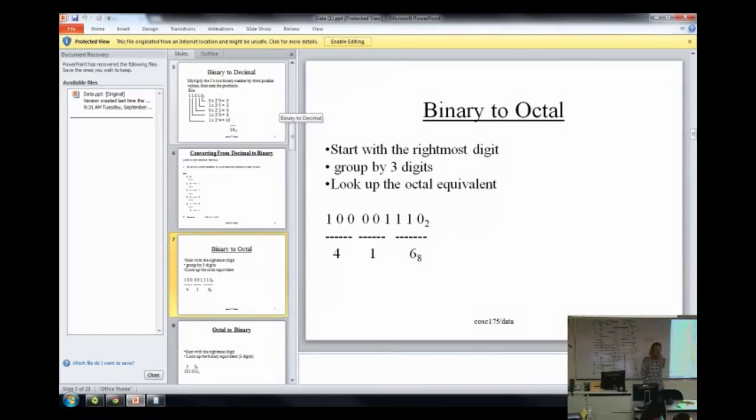1, 0, 0, 0, 0, 1, 1, 1, 0. So you get this long binary number. And the first thing you do is you start at the right and you group three digits. So I group these three, these three, and these three.